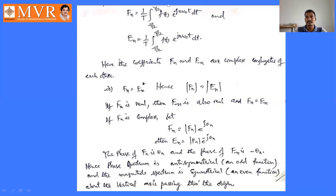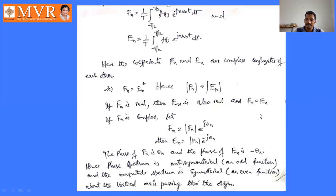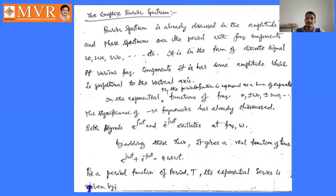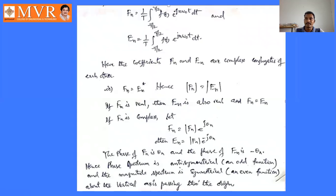So fₙ and f₋ₙ are complex conjugates, meaning fₙ = f₋ₙ* and hence |fₙ| = |f₋ₙ|. If fₙ is real, both are equal. If fₙ is complex, then fₙ = |fₙ|e^(jθₙ) and f₋ₙ = |fₙ|e^(−jθₙ), where θₙ is the phase angle of fₙ and −θₙ is the phase angle of f₋ₙ. This is the summary of the complex Fourier spectrum, which contains both frequency and phase spectrums.